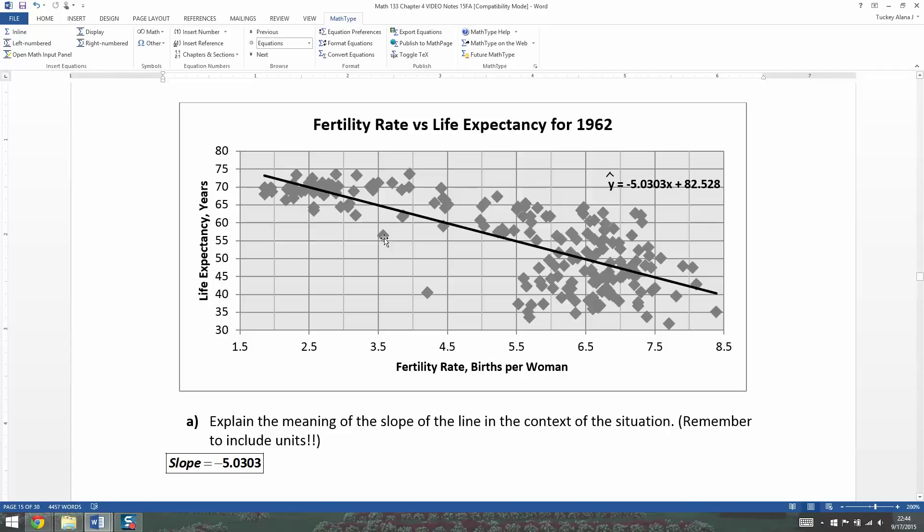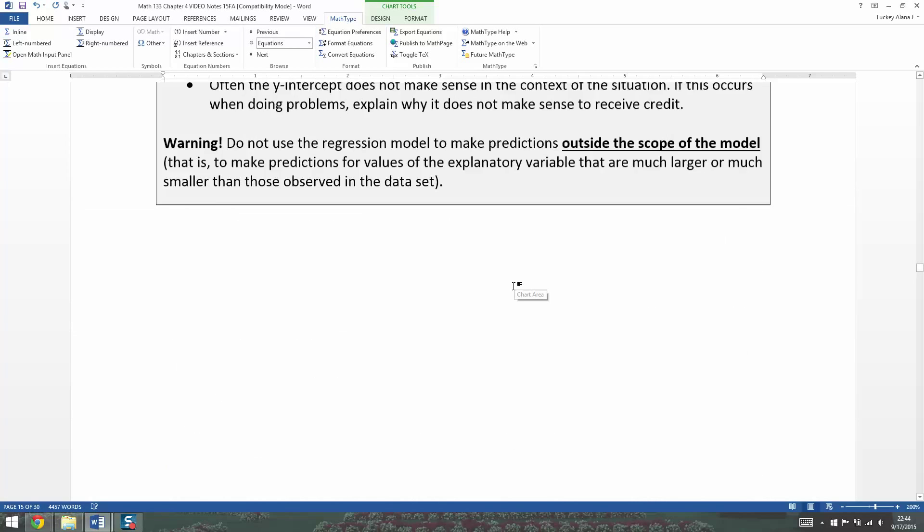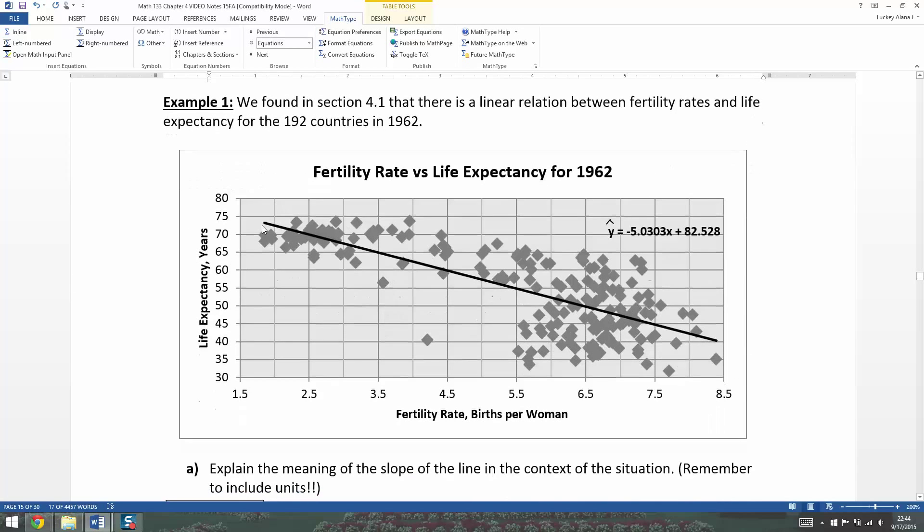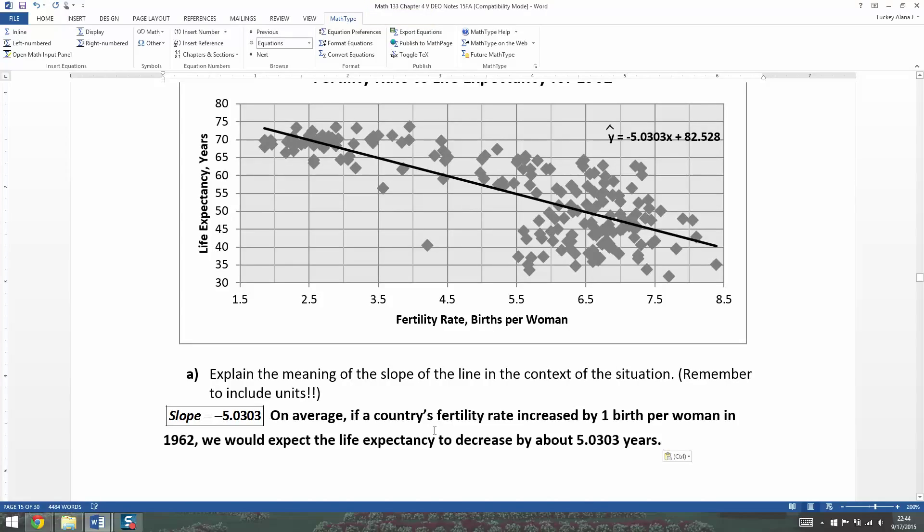Now, what this means is that whenever the x, which in this case is fertility rate increases by one, right? That's what it says right up here. When the x increases by one, the y is expected to, and in this case, decrease because this is a negative slope. So the life expectancy, that's your y variable, is expected to decrease by about 5.0303 years. And that's what I wrote. So on average, if a country's fertility rate increased by one birth per woman in 1962, we would expect the life expectancy to decrease, or life expectancy of that country, to decrease by about 5.0303 years. And I'm using the word decrease because, of course, this is negative.